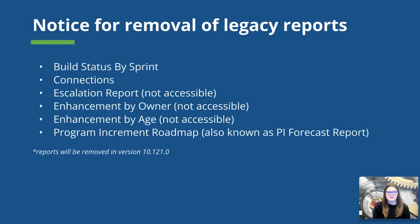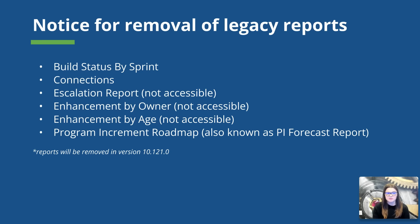Atlassian also had a notice for the upcoming removal of some legacy reports. Atlassian will be removing these six legacy reports, and additionally, the system admin toggles for these reports will also be removed. In a recent announcement, Atlassian mentioned that after a review of their recent usage data, they identified that these reports were not really providing much value to end customers. Some of these reports actually haven't been accessible to users in Jira Align since they moved from Jira Align 9x to 10x. This update will help the Atlassian team streamline their code base and reduce their overall testing overhead, which will let them build and ship enhancements even faster.